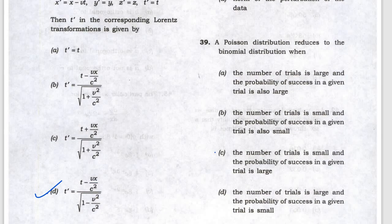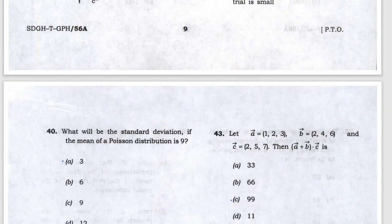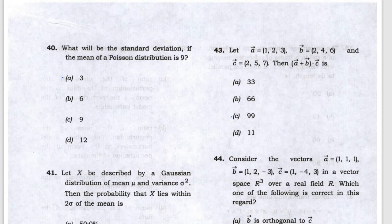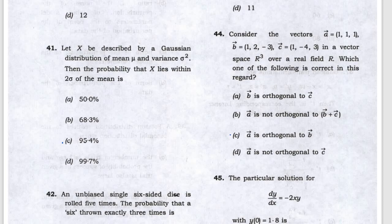Next, Poisson distribution reduces to binomial when the number of trials is small and probability of success in a given trial is large. Next, for Poisson distribution the standard deviation is √μ, so √9 = 3 will be the answer. The Gaussian distribution question — answer is C.